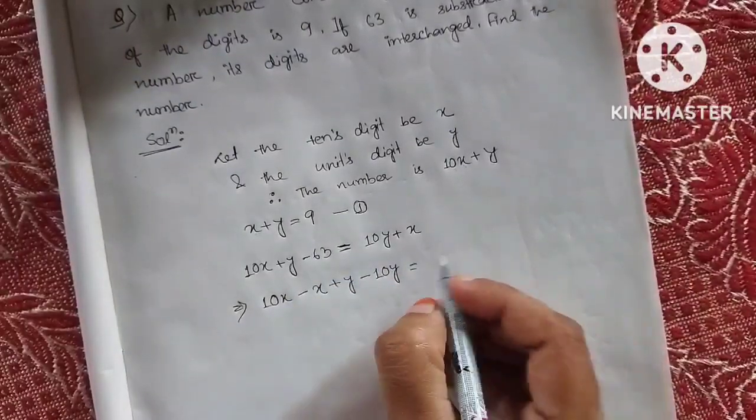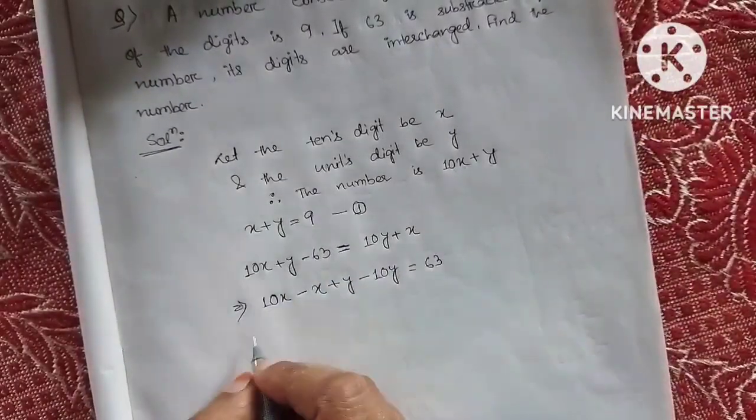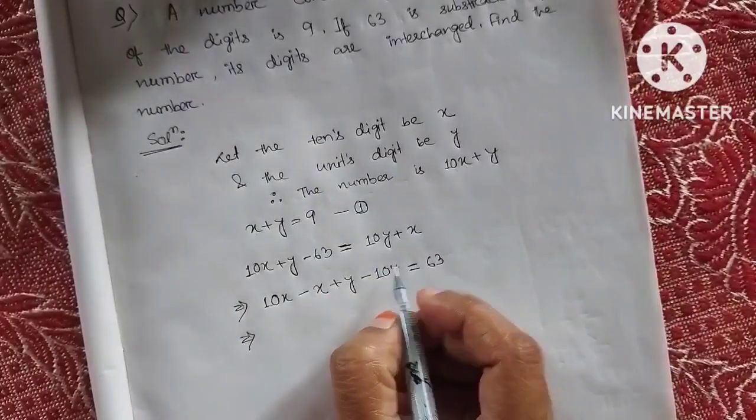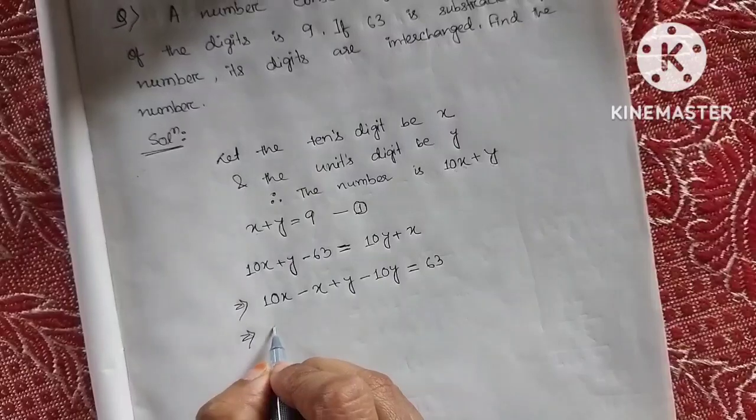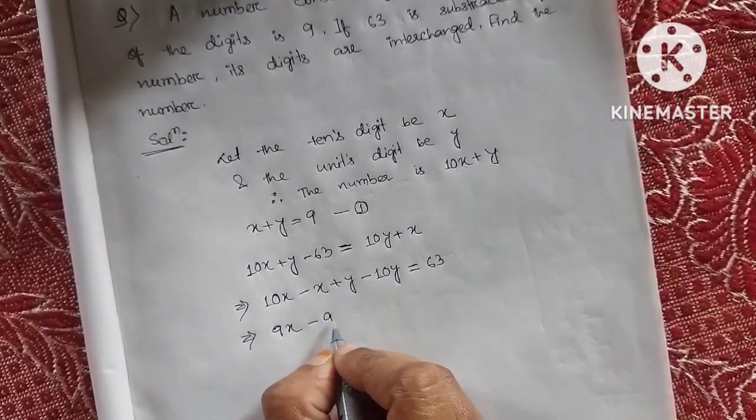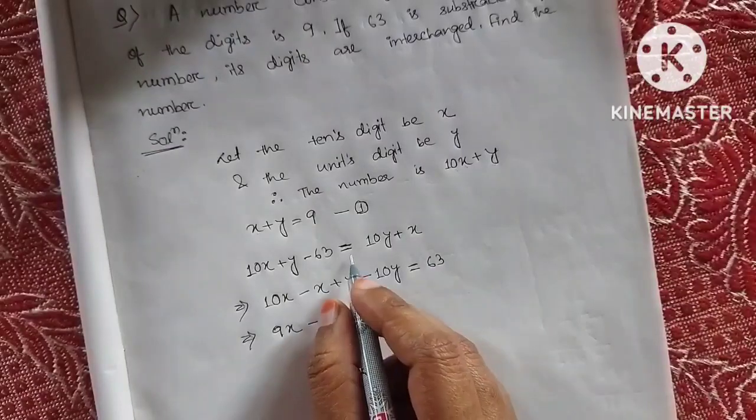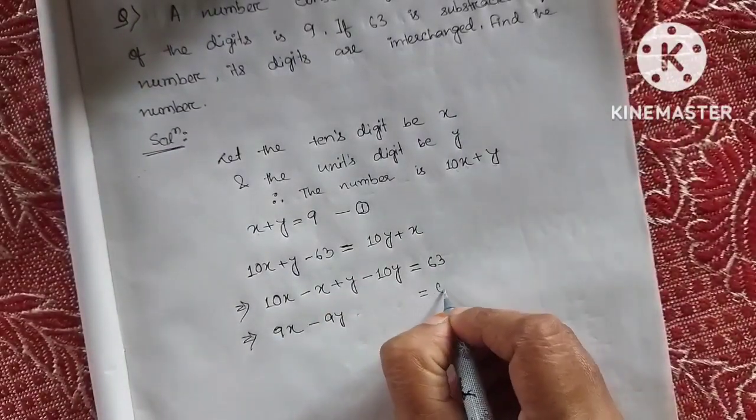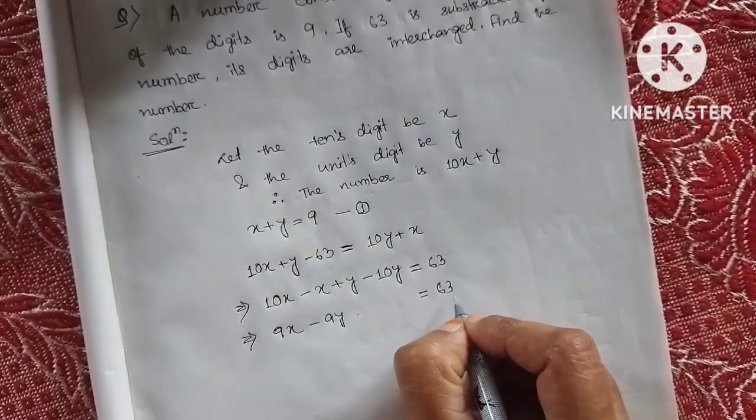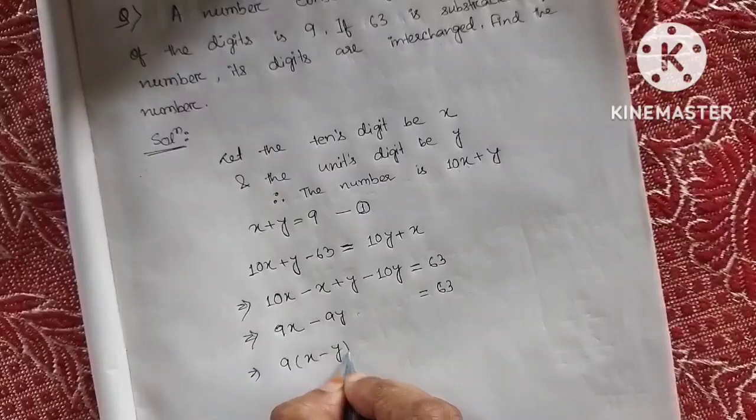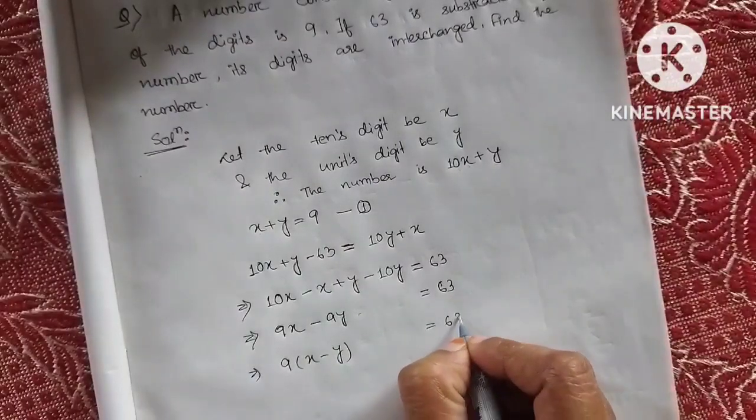Taking 9 common, we get x minus y equals 7. This is our equation number 2.